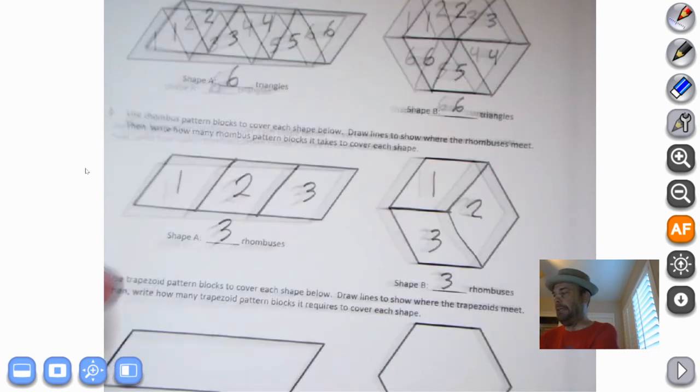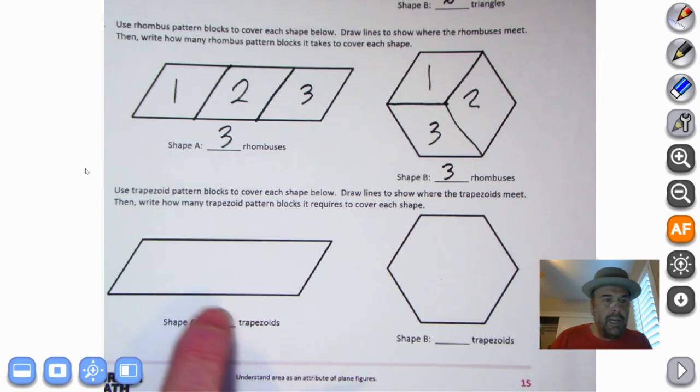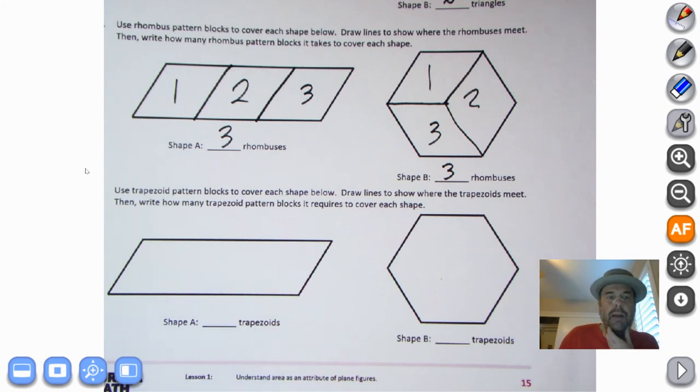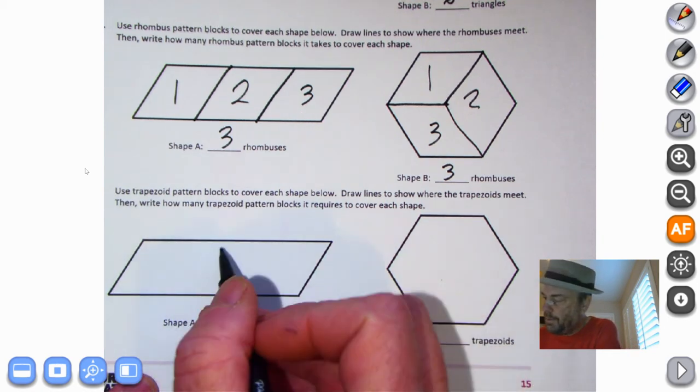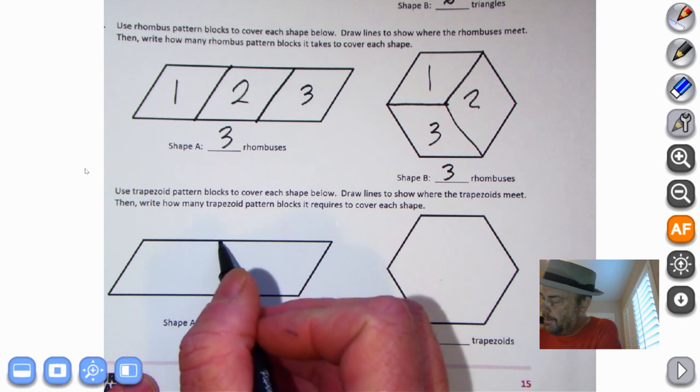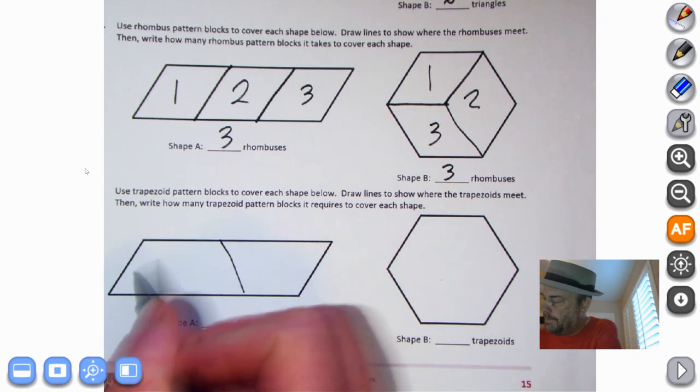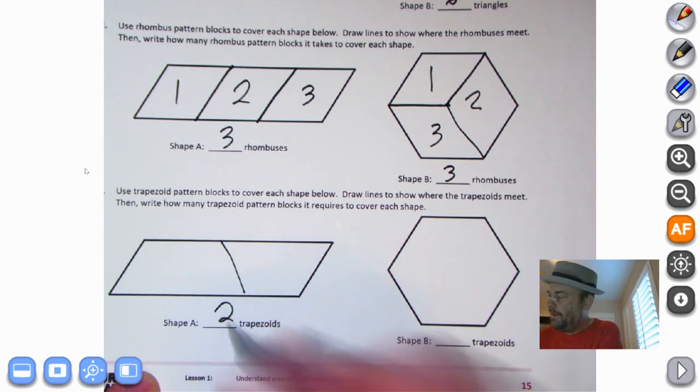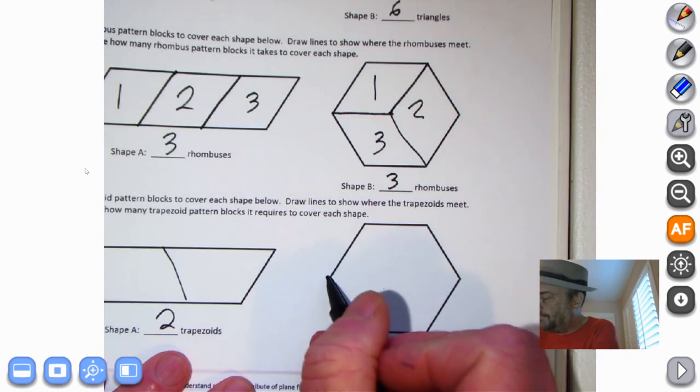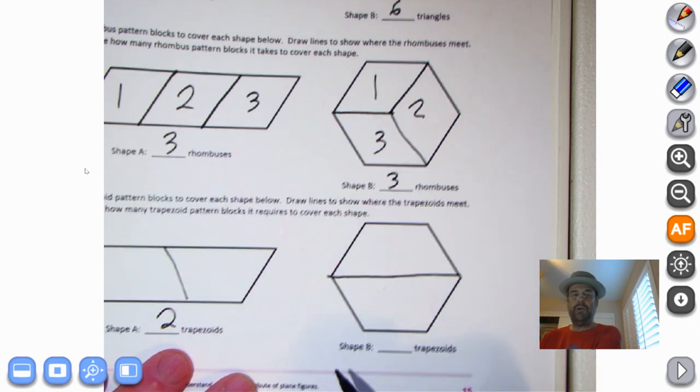Let's see what happens next. Use trapezoid pattern blocks to cover each shape below. Draw lines to show where the trapezoids meet. Then write how many trapezoid pattern blocks it requires to cover each shape. So we're looking at trapezoids. Remember, they're kind of two equal sides and two unequal sides. We're going to go back to the middle here and just copy that line right there. So there's one trapezoid, two trapezoids. And this one, watch what happens here. Two trapezoids.